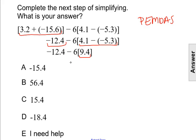So now we have negative 12.4 minus 6 times 9.4. We've taken care of all the groups and all the sets of parentheses or brackets.